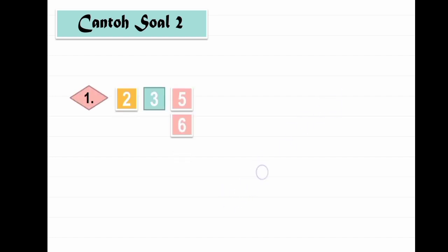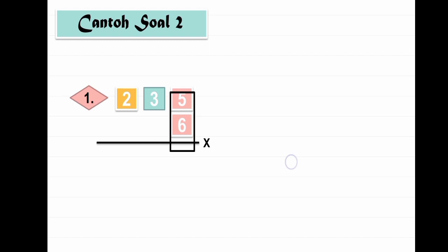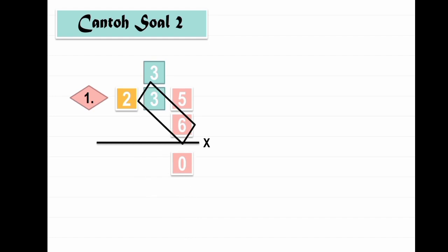Lanjut, contoh soal kedua: 235 dikali 6. 5 dikali 6 sama dengan 30. Ditaruh angka 0, disimpan angka 3. 6 dikali 3 berapa teman-teman? Ya, 18. Ditambah angka 3 jadi 21. Ditaruh angka 1, disimpan angka 2. Yang terakhir 6 dikali 2 sama dengan 12, ditambah 2 jadi 14. Hasilnya 1410.